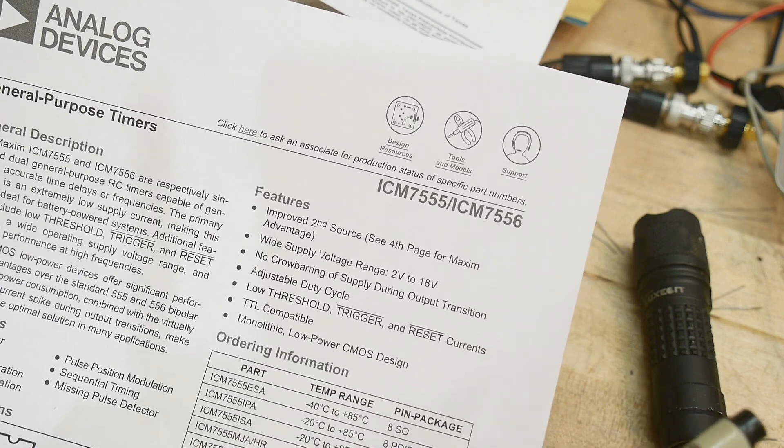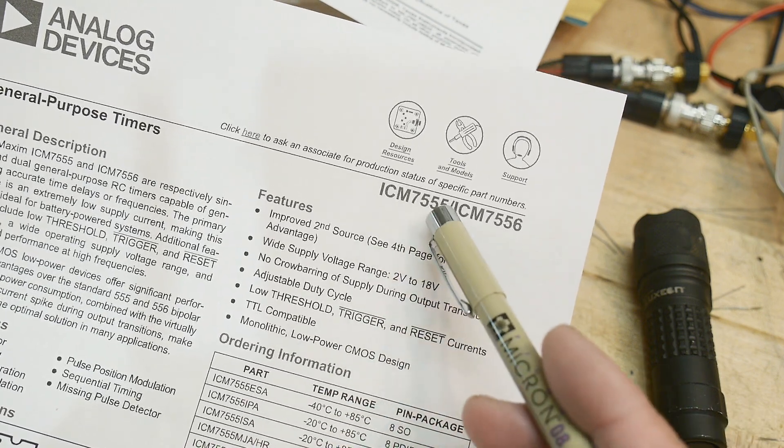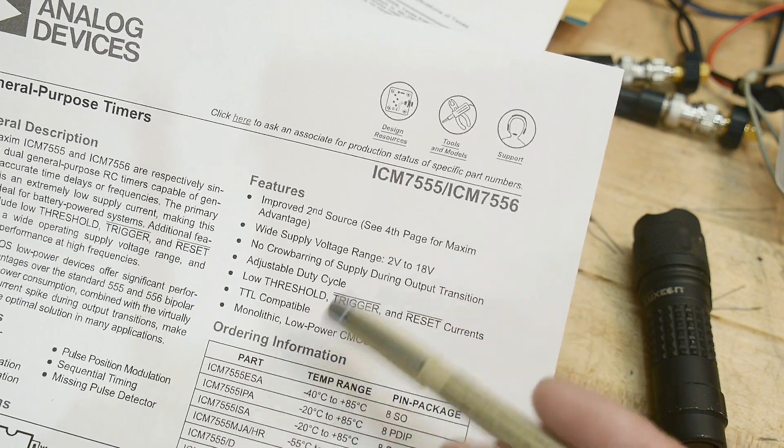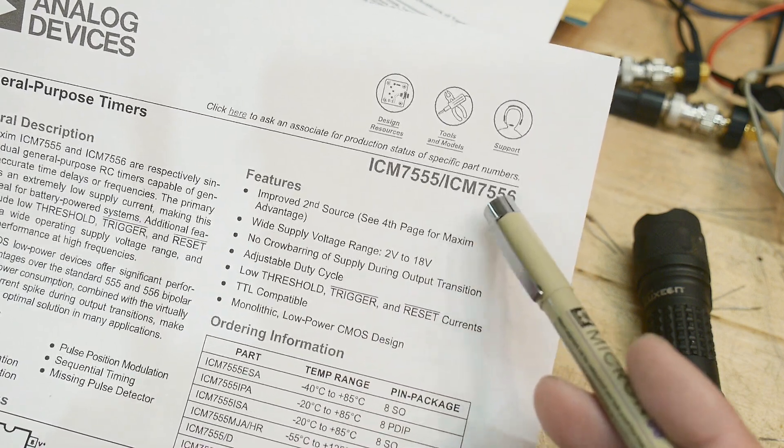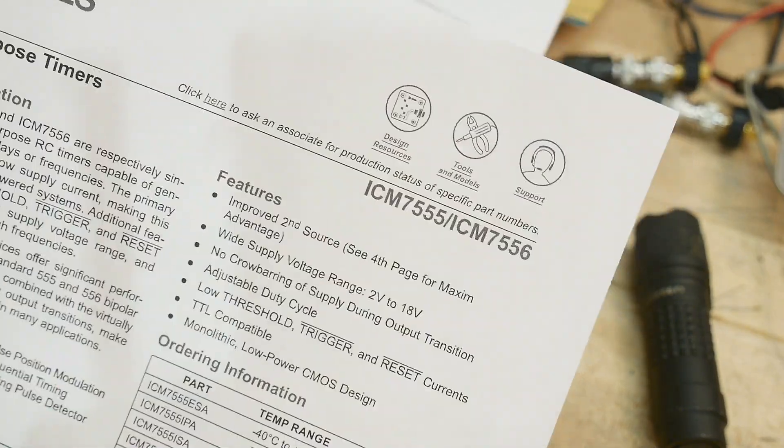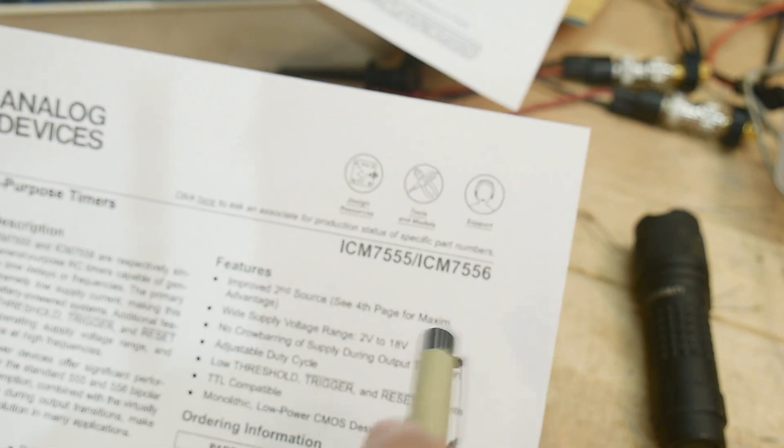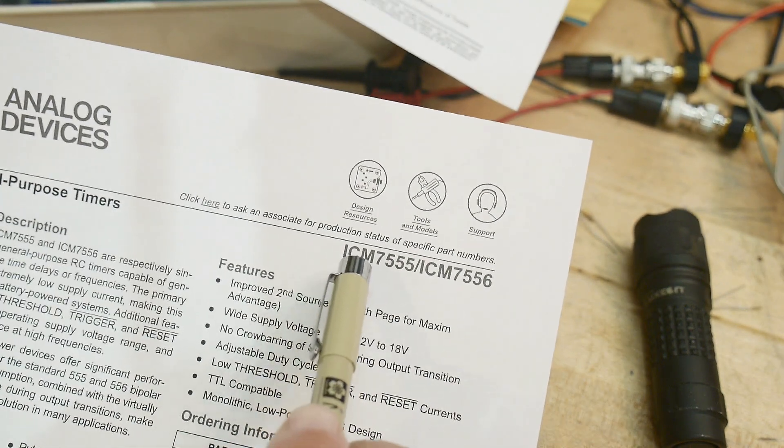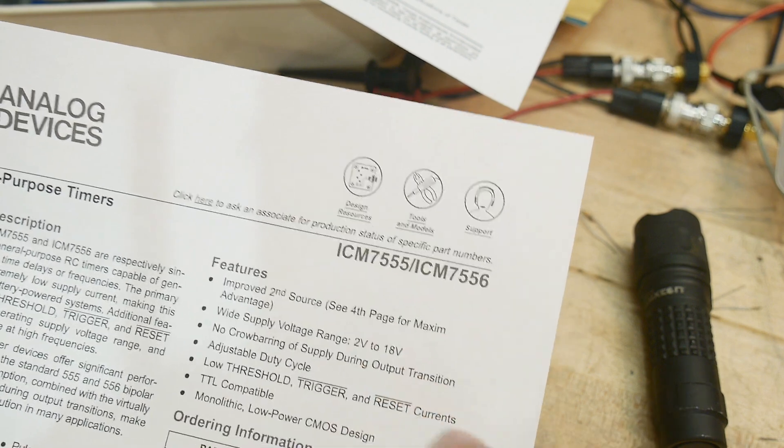They're much lower voltage. So you can buy 555s in CMOS. We happen to have a 556 in CMOS today and they're all pin compatible and all that good stuff. So we are going to be chip of the day. Everybody loves chip of the day. It's going to be an ICM 7556.